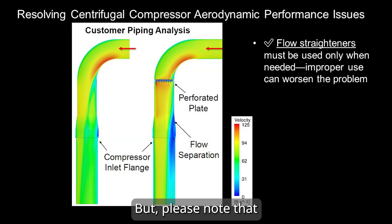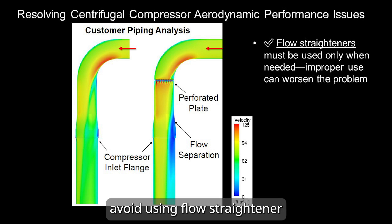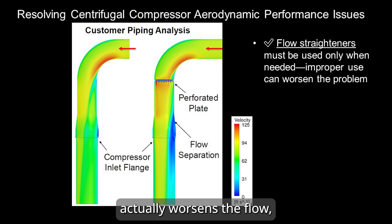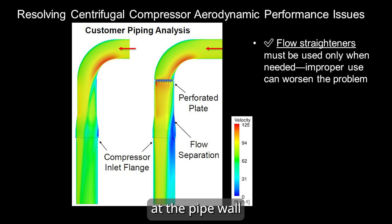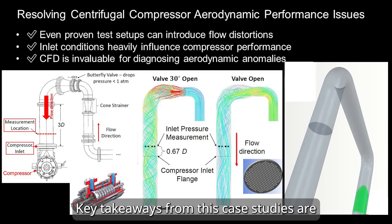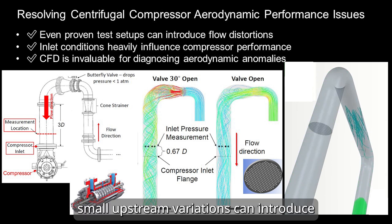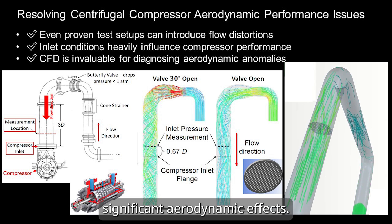Please note: avoid using flow straighteners if not needed. In this example, a perforated plate actually worsened the flow, causing separation at the pipe wall and potentially reducing compressor efficiency. Key takeaways from this case study: even in a well-established test setup, small upstream variations can introduce significant aerodynamic effects.